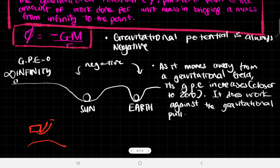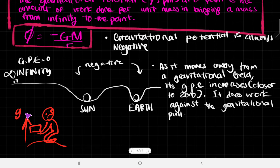Let's say there's a brick and you are lifting the brick up. You are giving it gravitational potential energy as you lift it up. Gravitational potential energy is the amount of work done against forces to give it the position that it needs. It also means that it has the potential to drop back down.